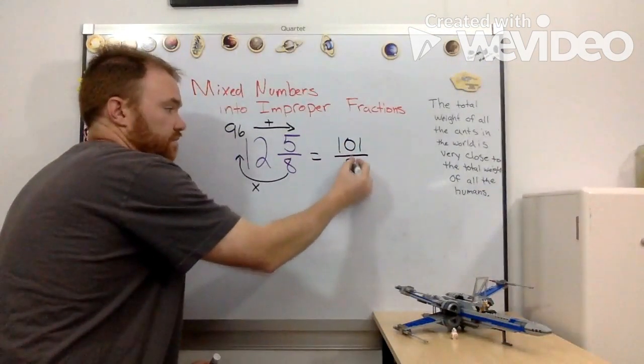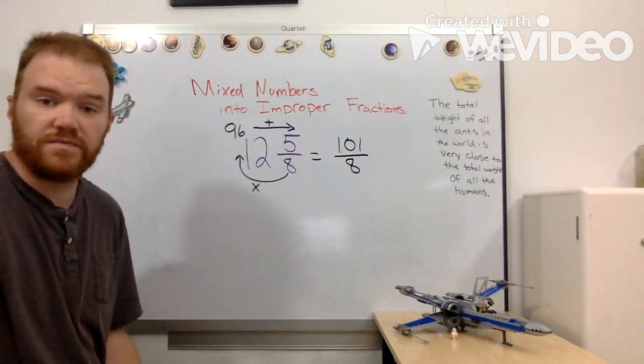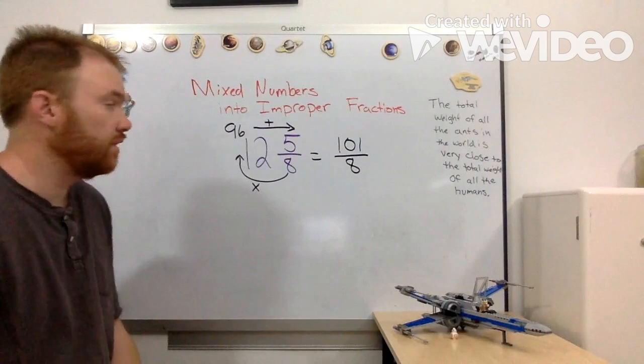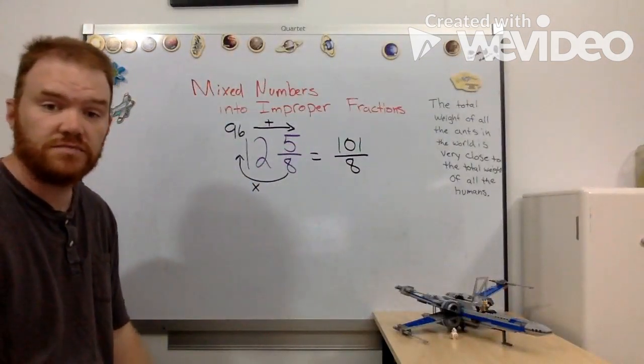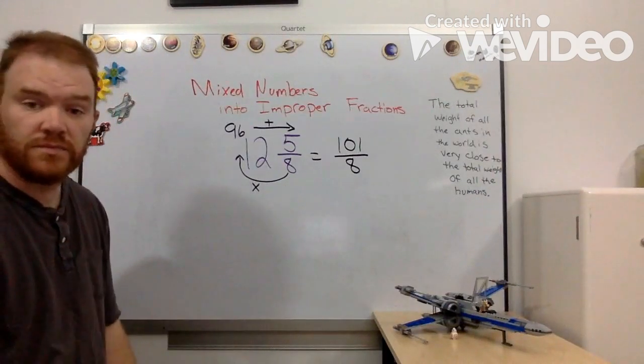Denominator stays the same. 101 eighths. It really is that simple. Obviously you might get some pretty big numbers sometimes, other times maybe not, but it is that simple.